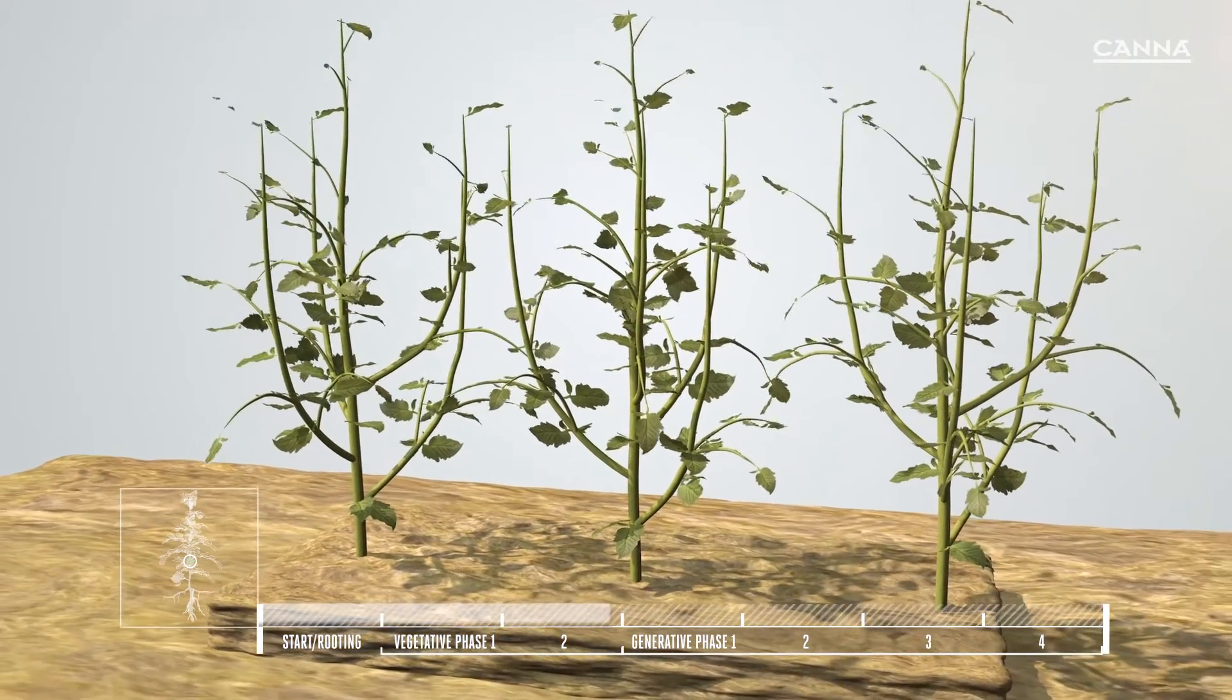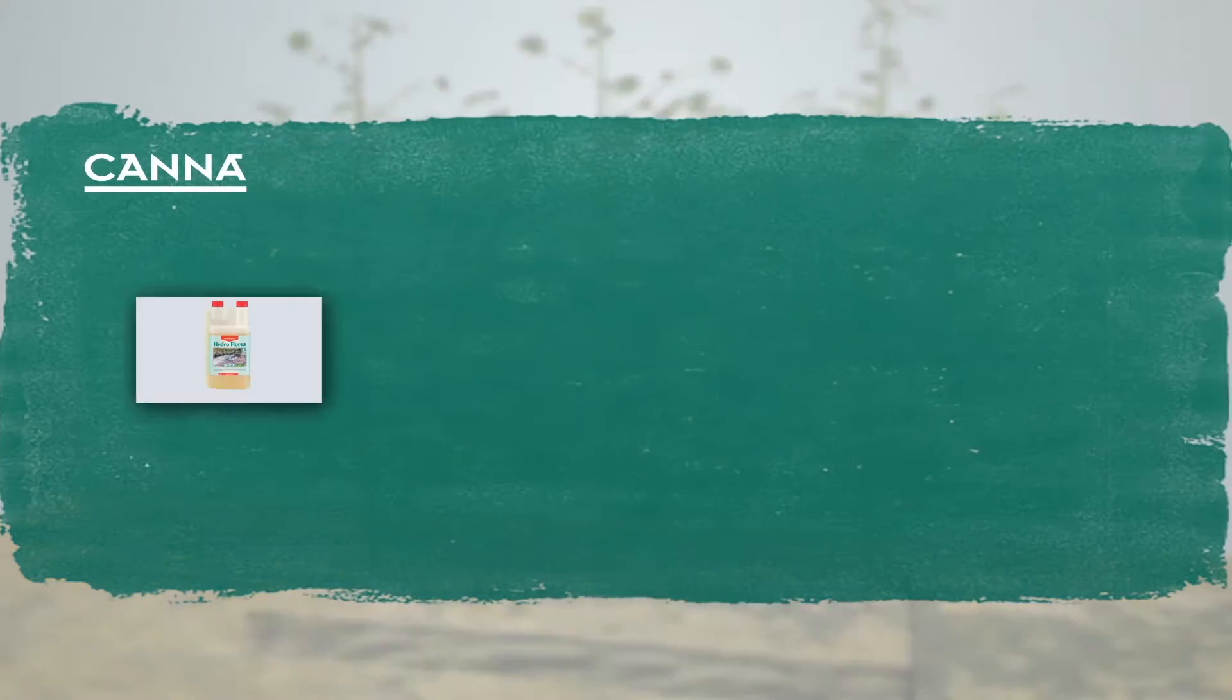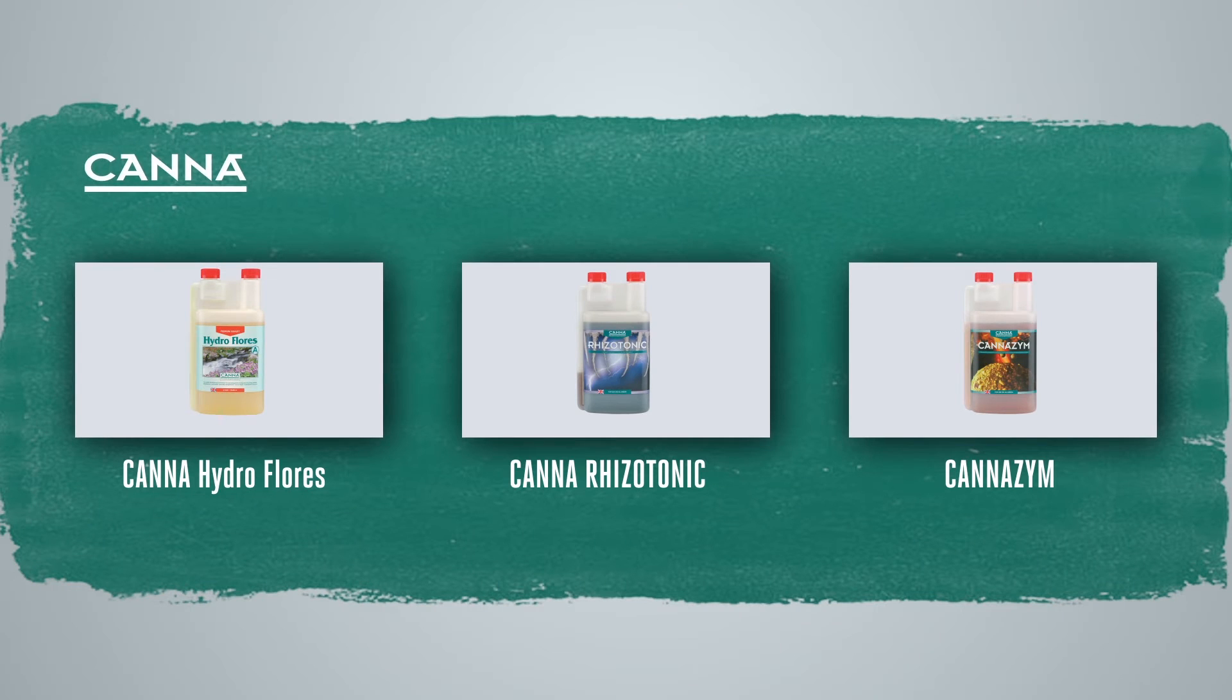The plant will now enter the generative phase and will require a different balance of nutrients. Watch the video on Canna Hydroflores to find out more. And of course, don't forget the Canna Rhizotonic and Cannazym additives, which are also used during the vegetative phase and will result in an even better yield.